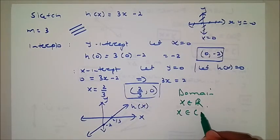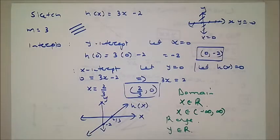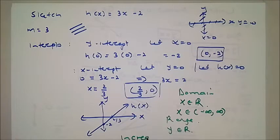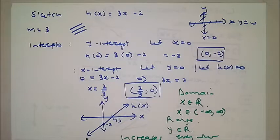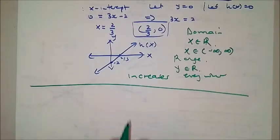The domain is from negative infinity to positive infinity. The range is the same — y is an element of real numbers. Also, this function is not decreasing; it is increasing everywhere, going up continuously. So this is an increasing function.